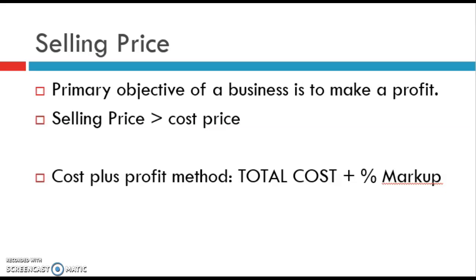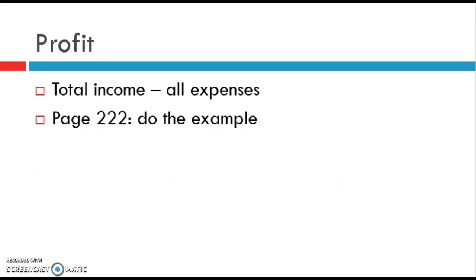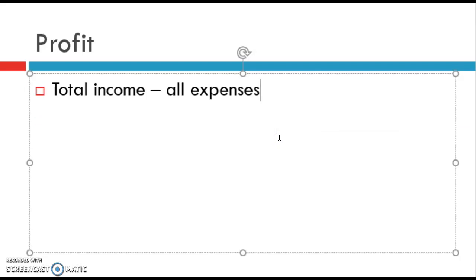In the marketing function, we looked at different techniques for determining your selling price. Most often we use a cost-plus-profit method, which looks at what is your total cost plus how much markup percentage you want to add to that. Now that we've looked at costs and selling price, it's important to remember what profit is: profit is all your income minus all your expenses.